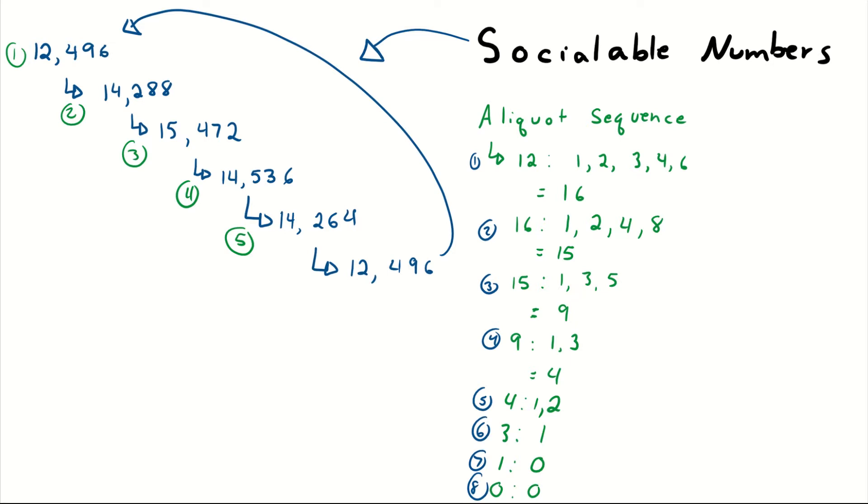Sociable numbers are a special type of aliquot sequence. So it gets interesting when you're looking at aliquot sequences and just kind of thinking about do they repeat or not? How long is the aliquot sequence? Sometimes you got big numbers like 1,244,460. And you take a look at this big guy. Does he like friends? Does he hang out with anyone?